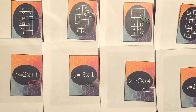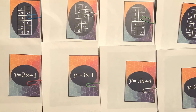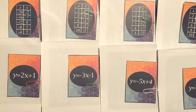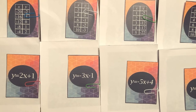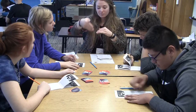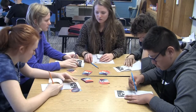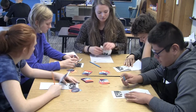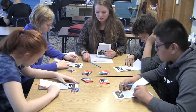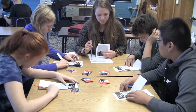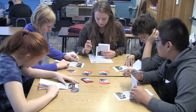Begin round one by handing each player a recording booklet open to a blank page. Each player must look at the representation on the previous page of the recording booklet and draw the next representation in the cycle.